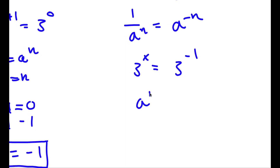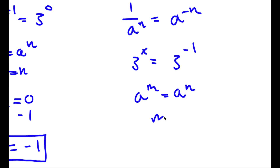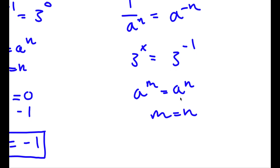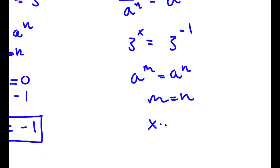Now if I have something in the form a^m equals a^n, this means that m equals n. So in this case, x equals negative 1.